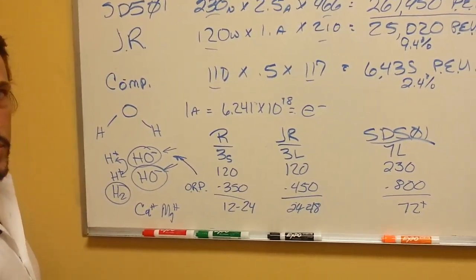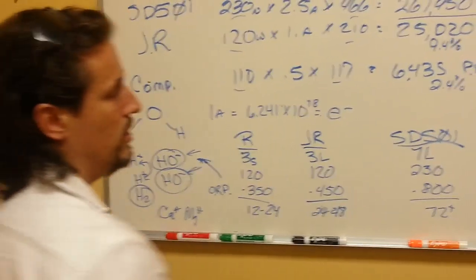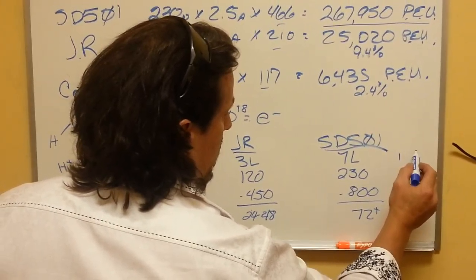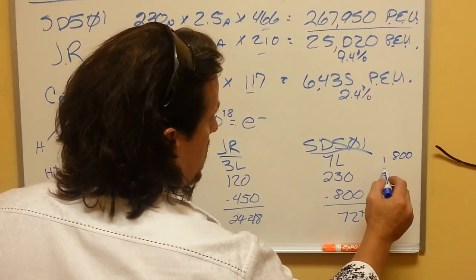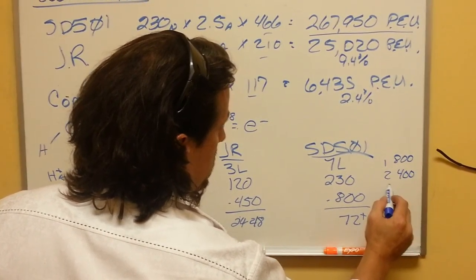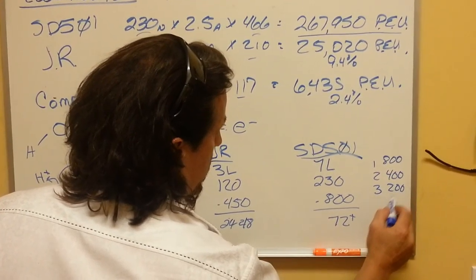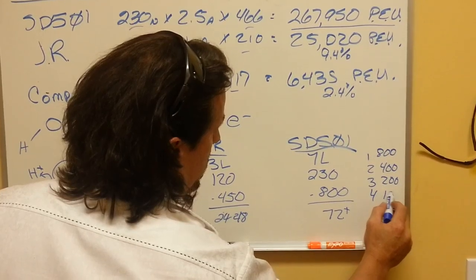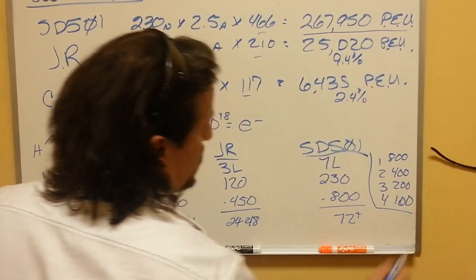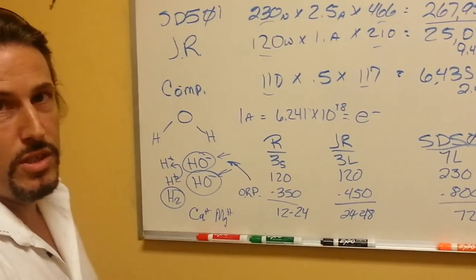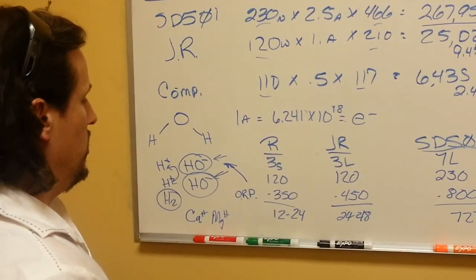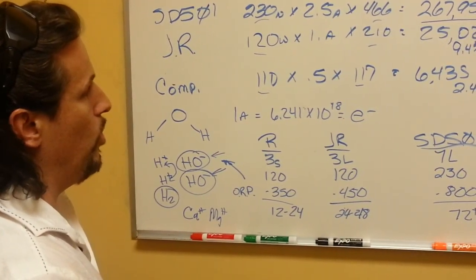It degrades over time in what's considered an exponential factor. So first day, if this is 800, goes to 400. Third day would be 200. Fourth day would be 100. That's not actual facts based on research. That's me playing with my ORP meter for a week and just testing the different types of water.